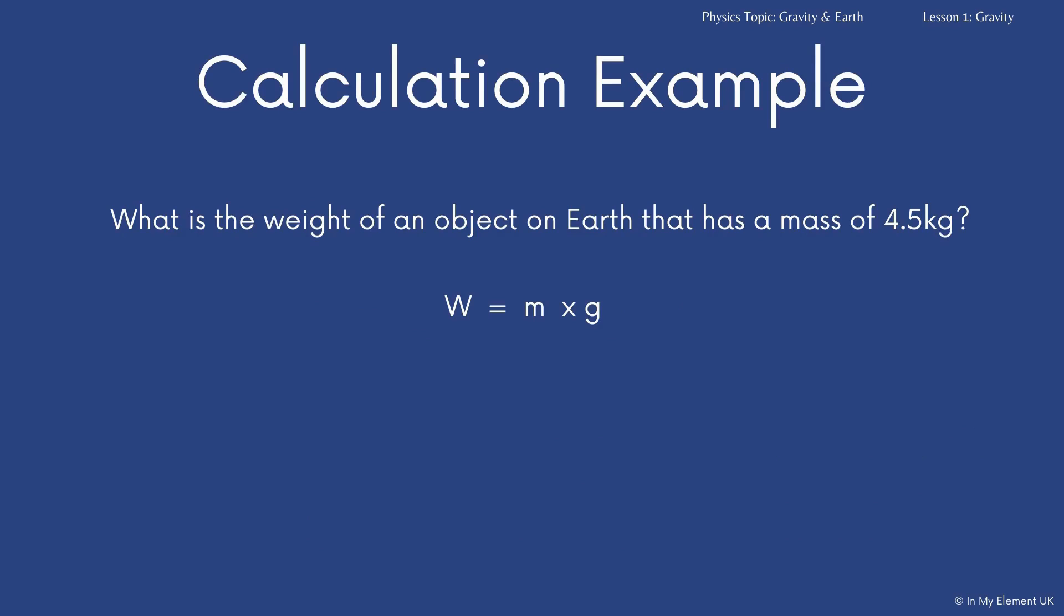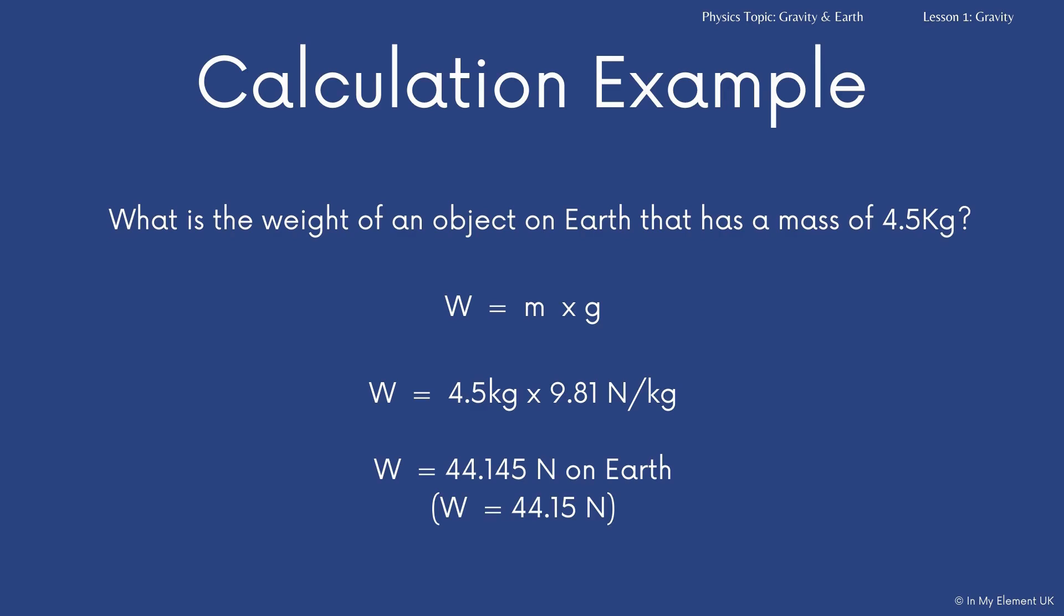So, an example, what is the weight of an object on Earth that has a mass of 4.5 kilograms? Assume here that you're using 9.81. So you've got 4.5 multiplied by 9.81. Remember, like we always say, you are allowed your calculators when you are working out in science, and any test you should have your calculator with you. So the weight of that object on Earth is 44.145 newtons, and we've rounded that to 44.15 newtons.